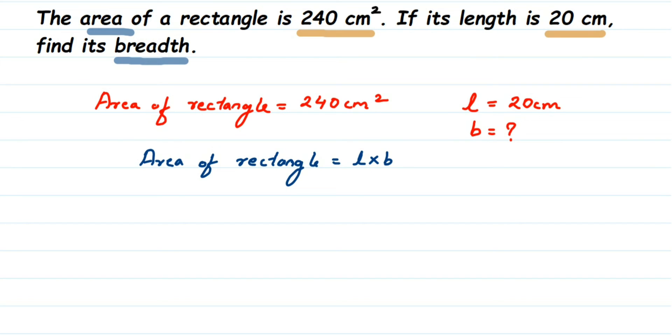So here we are going to substitute the value in this formula. We know area of rectangle which is 240 cm square. I will just write down the numbers only. It is 240. I am going to write down the units at the end. It is equal to, we know length which is 20. So in place of L, I am going to put 20, multiply it by B because we do not know the breadth value.